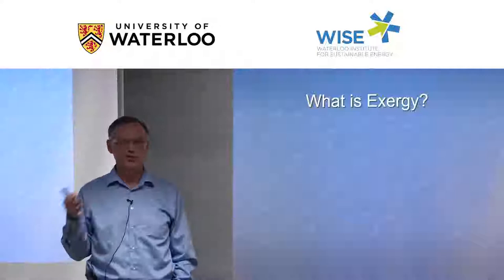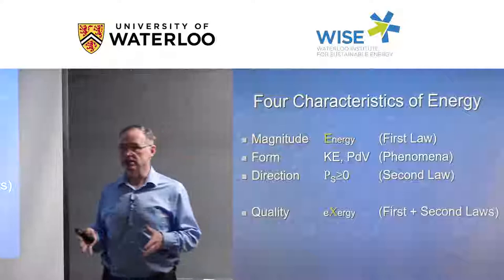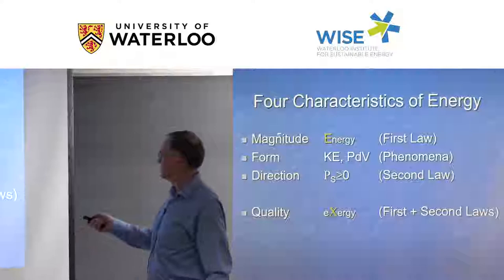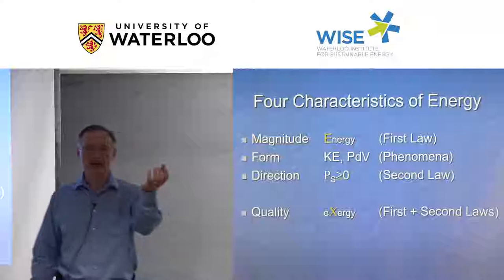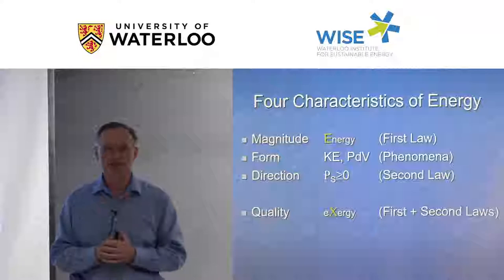To understand exergy, energy must be put in its place. Energy has four characteristics. The first and most familiar is magnitude — a chocolate bar has 220 calories, that's the magnitude. The second is form: kinetic energy, for example. Someone hits you — that hurts, it has energy in it. The form of food matters — you can eat a candy bar, but not dirt or stones.